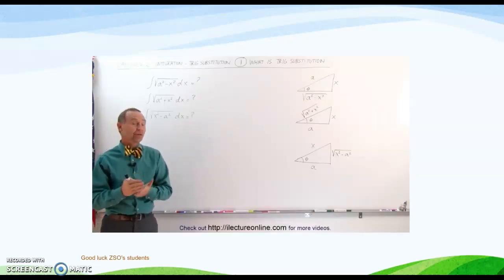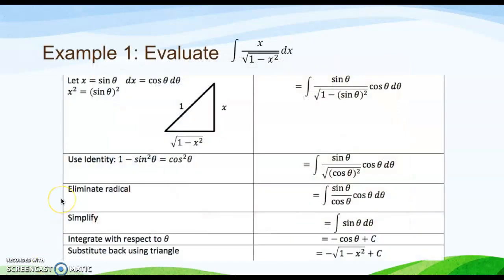Now we move to an example: evaluate the integration of x over square root of 1 minus x squared dx. Let x equal sine theta, so differentiating gives dx equal cos theta d theta. Also, x squared equals sine squared theta. Using a right triangle, the hypotenuse is 1, the opposite side is x, and the adjacent side is square root of 1 minus x squared.